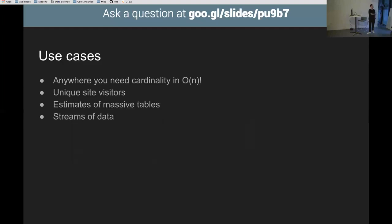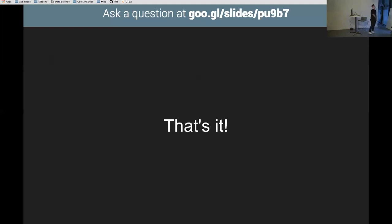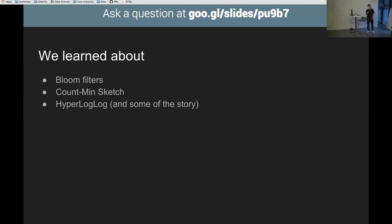Why would you use HyperLogLog? Anywhere you need cardinality: unique site visitors, estimates of big database tables, streams of data. And that's it — three probabilistic data structures. Bloom filters for set membership, count min sketch for counting and frequency tracking, and hyper log log for cardinality estimation with the crazy math story behind it. Thank you very much.